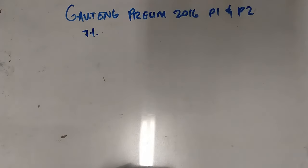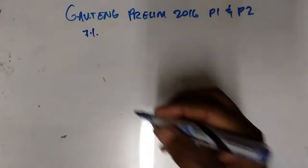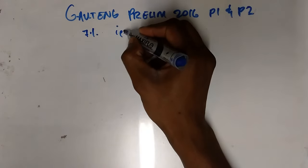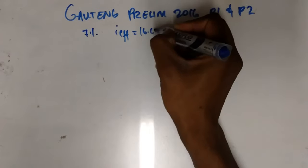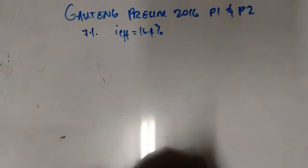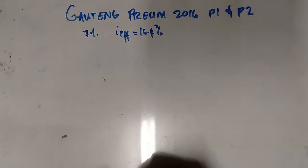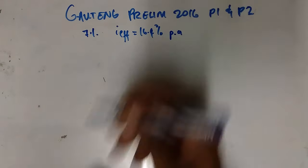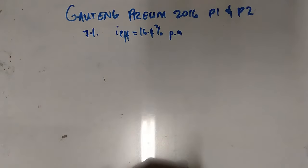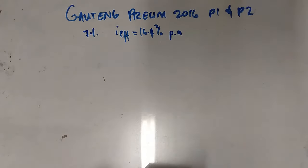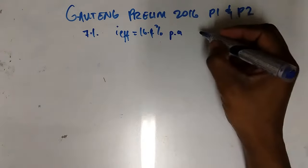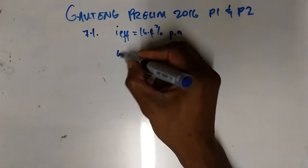Let us read the problem statement. It says: Johan purchased a new car. The bank offered him a loan at an effective interest rate of 16.4% per annum. Determine the nominal rate compounded monthly that he is required to pay. So we need to find i_nominal.